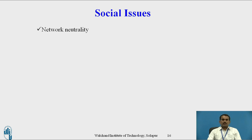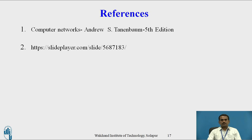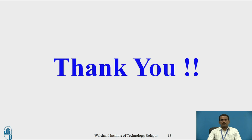Social Issues: The computer network concept can be used in social issues to get information from the media. Nowadays, a lot is happening in social networking and in political places, and by using the computer network concept, people can get data through the network. Social issues include network neutrality, profiling users, and phishing. Through these points, we can understand what is happening in the social sphere. These are the references used for preparing this presentation. Thank you.